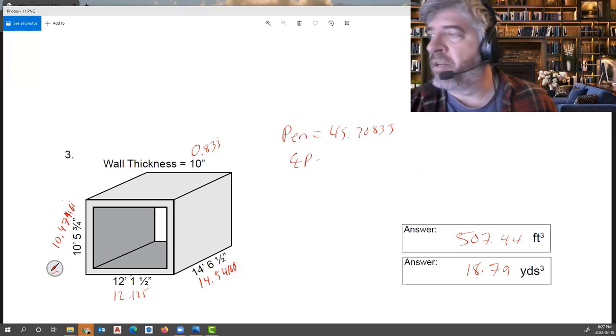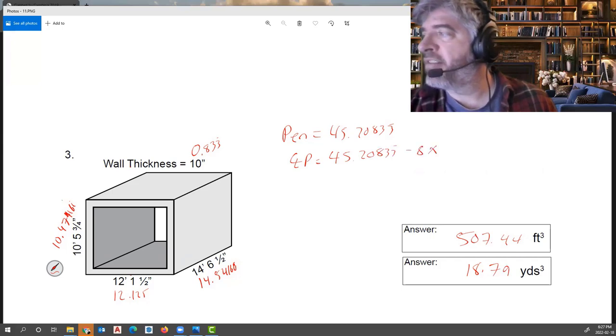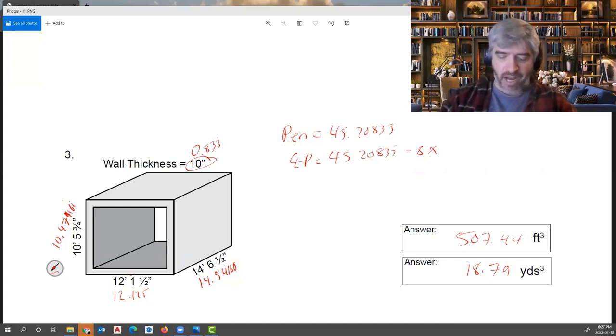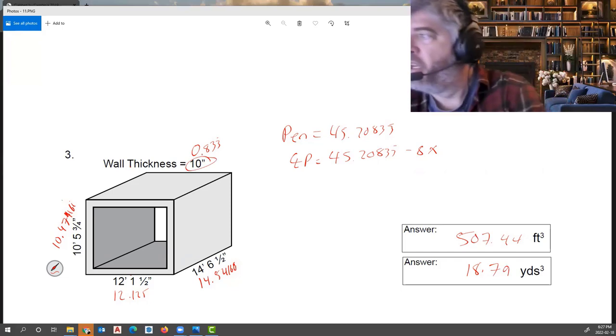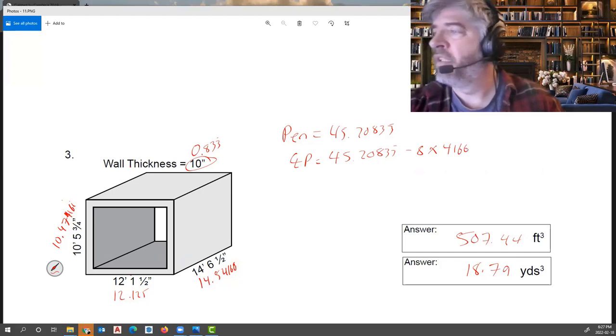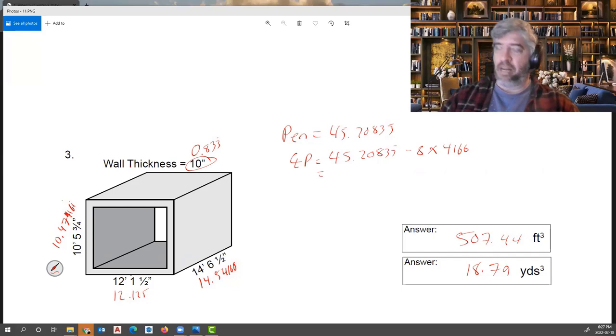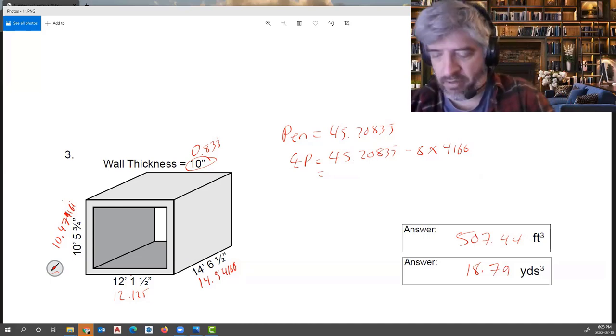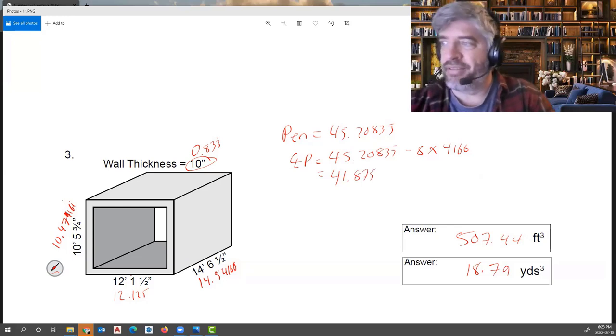So my center line perimeter is going to equal my perimeter 45.208333 minus 8 times half my thickness. My thickness is 10 inches, so I want 5 inches. So 5 divided by 12 is 0.4166. So my center line perimeter for this shape is 45.208333 minus 8 times 0.41666666, which gives me a center line perimeter of 41.875.